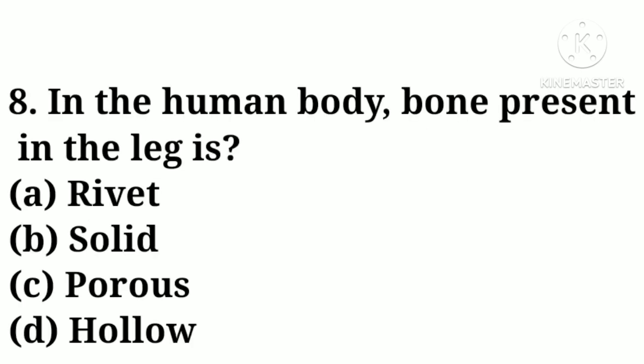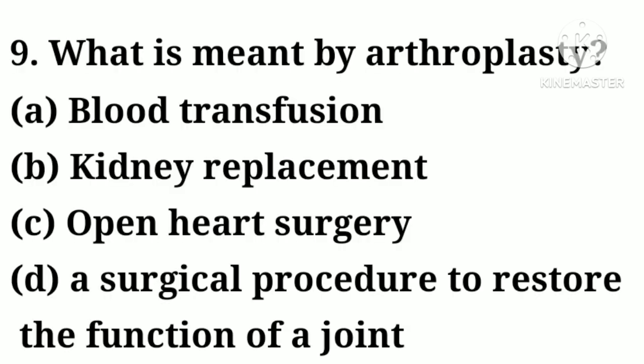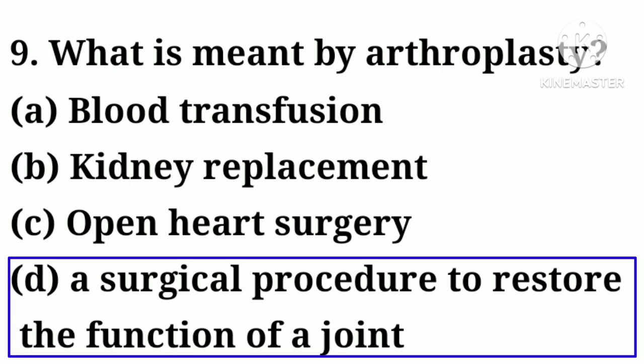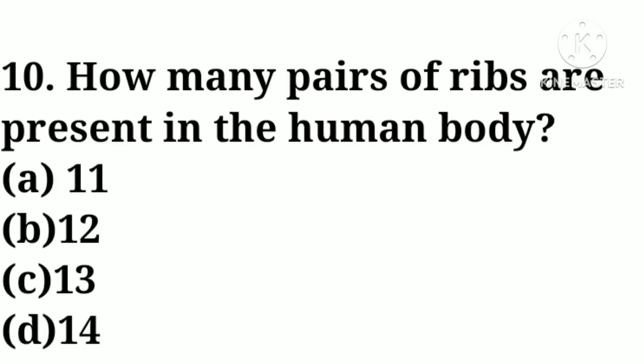Question number eight: the bone present in the leg of the human body is — option A: hollow, option B: solid, option C: porous, option D: hollow. Correct answer: option B, solid. Question number nine: what is meant by arthroplasty — option A: blood transfusion, option B: kidney replacement, option C: open heart surgery, option D: a surgical procedure to restore the function of a joint. Correct answer: option D.